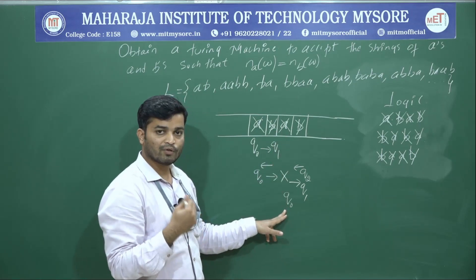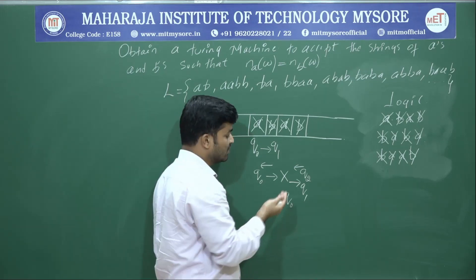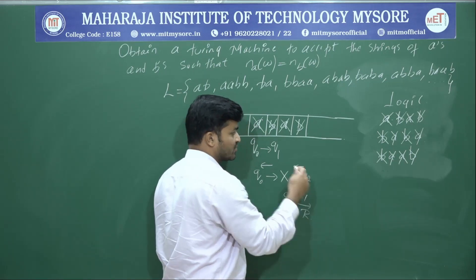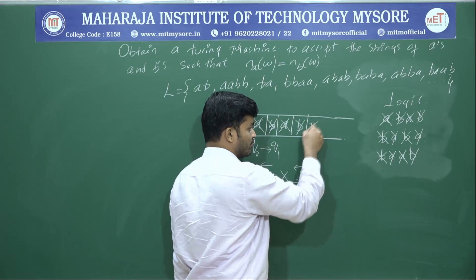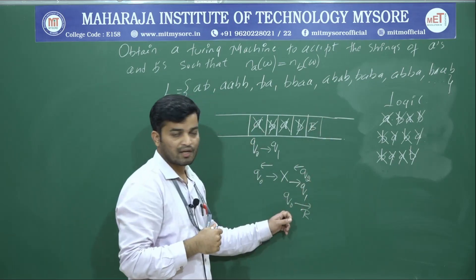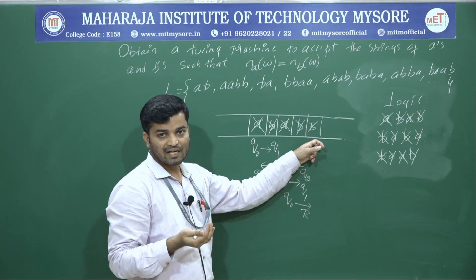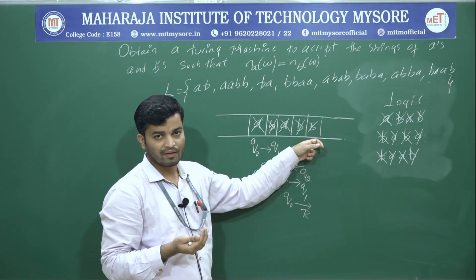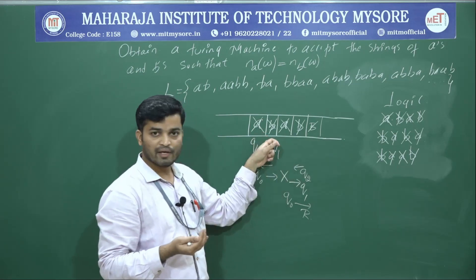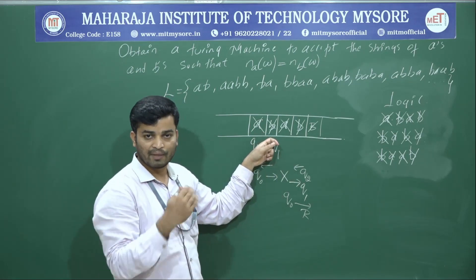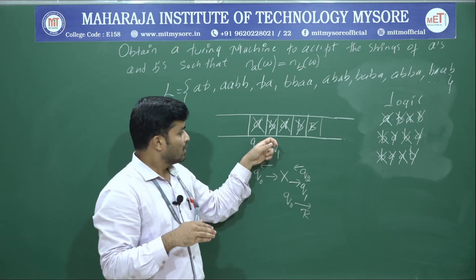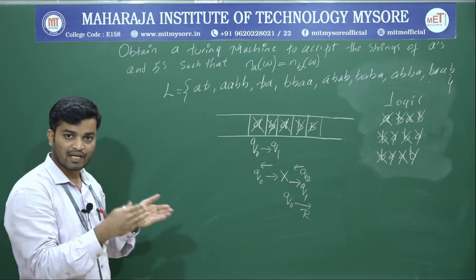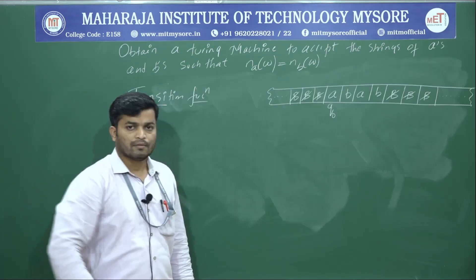Once I get X, it connects back to q0. In q0, we replace A with X. While moving right in q0, suppose if I get a blank space, that means there are no extra A's — you can accept that particular string because the string is valid. And in the same way, since the string may start from B, I will replicate this design for that case.